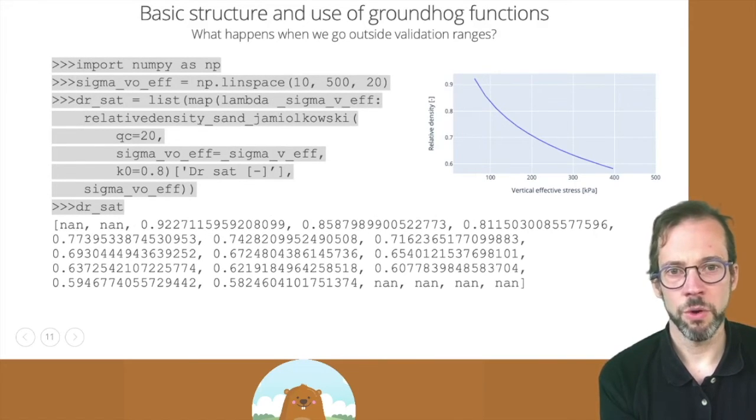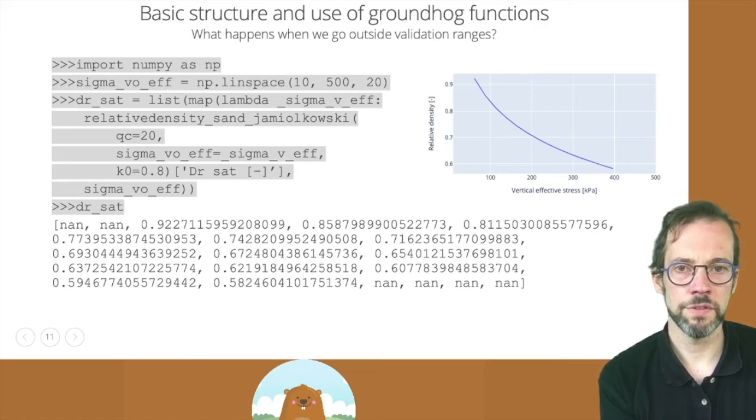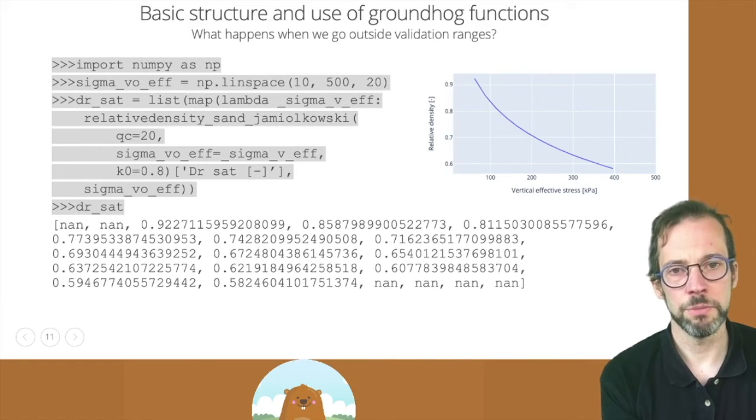Python makes it very easy to automate things. So here in this code example, you can see that we're generating an array of vertical effective stresses, selecting 20 values between 10 and 500 kPa, and then running the calculation through a map lambda statement.